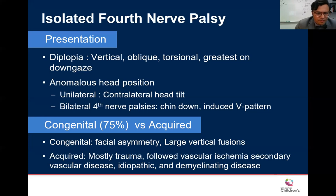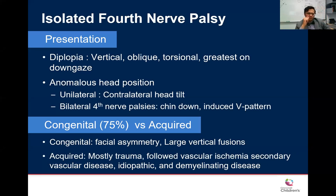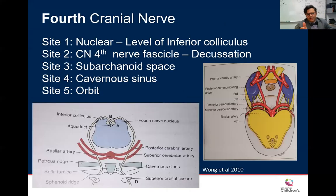If fusion breaks down for any reason, the patient will develop vertical diplopia. You can distinguish congenital from acquired by measuring fusion amplitudes: normally we fuse vertically about 1–5 prism diopters. In congenital cases, the patient may fuse much larger vertical disparities — greater than 5 or 6 prism diopters — indicating large fusion amplitudes, suggesting a long-standing congenital issue rather than a new acquired problem. The most common acquired cause is trauma, related to the unique anatomy of the fourth nerve.